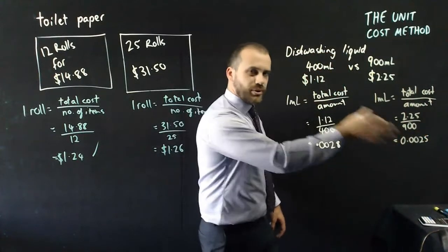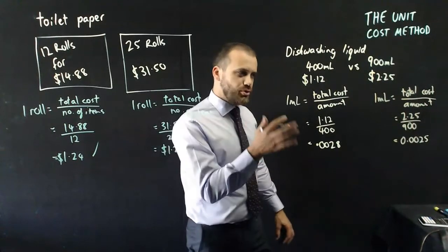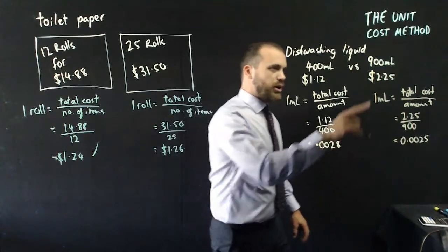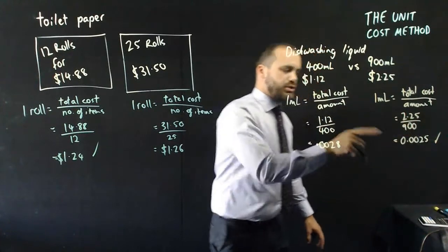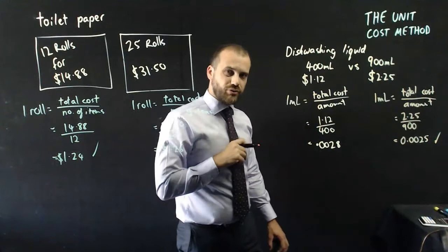0.0025 is smaller than 0.0028, therefore, I should buy this packet here. It's cheaper to buy it in the 900 mil bottle than it is to buy it in the 400 mil bottle.